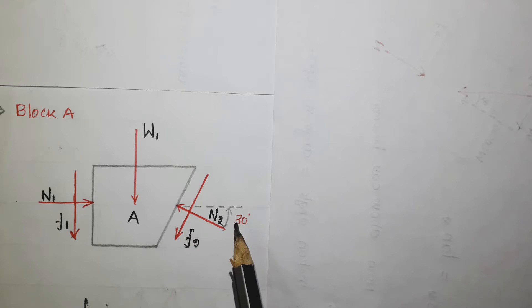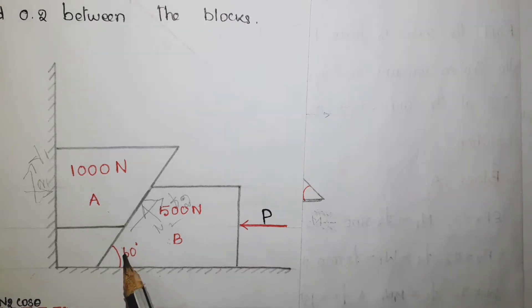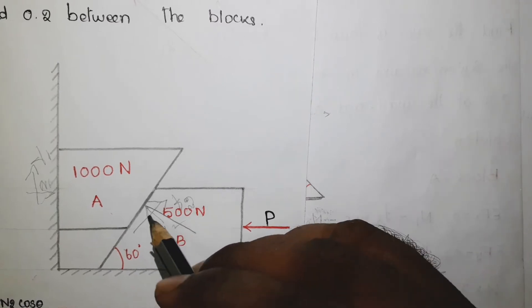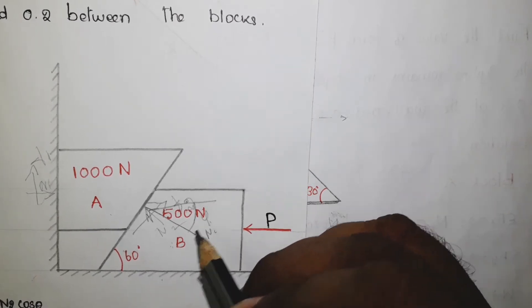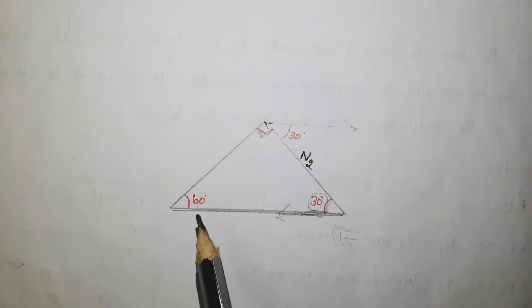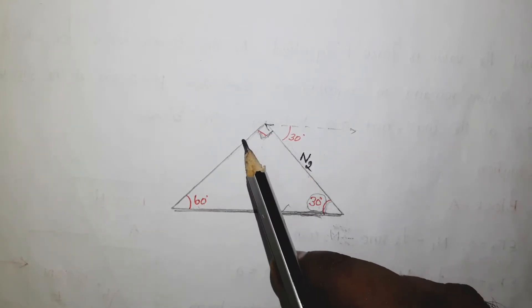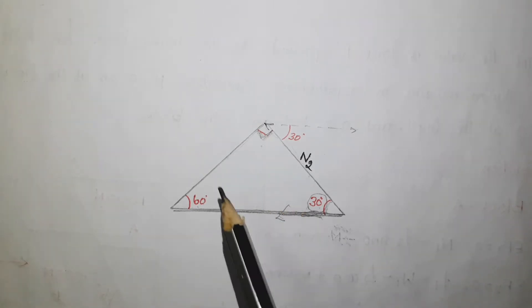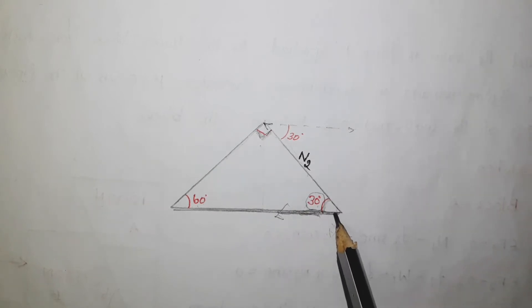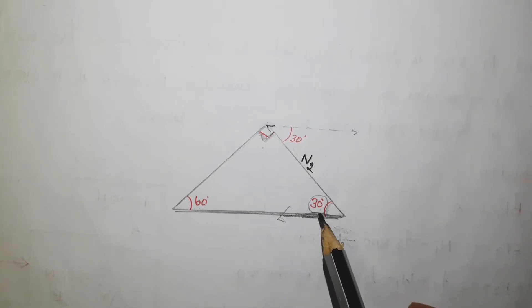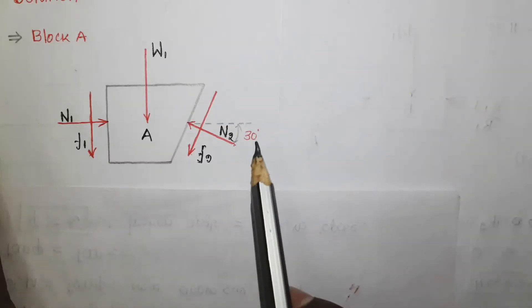We need to understand how the angle 30 degrees appears in the free body diagram. The angle of the surface is 60 degrees. The normal reaction N2 must be perpendicular to the surface, so that angle is 90 degrees. Since the three angles of a triangle sum to 180 degrees — 60 plus 90 plus 30 — the normal reaction N2 is inclined at 30 degrees from the horizontal direction.